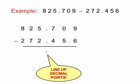825.709 take away 272.456. Make sure at the outset that you line up the decimal points.